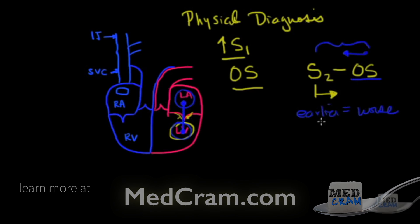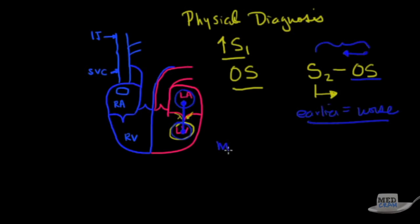The murmur itself is best heard at the apex. You may even want to get the patient in the left lateral decubitus position. You're going to hear a low pitch rumbling diastolic murmur.